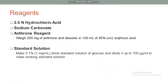Reagents used in this study are 2.5 normal hydrochloric acid, sodium carbonate in solid powdered form, and Anthrone reagent. For making Anthrone reagent, weigh 200 milligrams of Anthrone and dissolve in 100 ml of 95% volume/volume sulfuric acid. To make the standard solution, prepare 0.1% or 1 mg per ml stock standard solution of glucose and dilute it to 100 micrograms per ml to make the working standard solution.